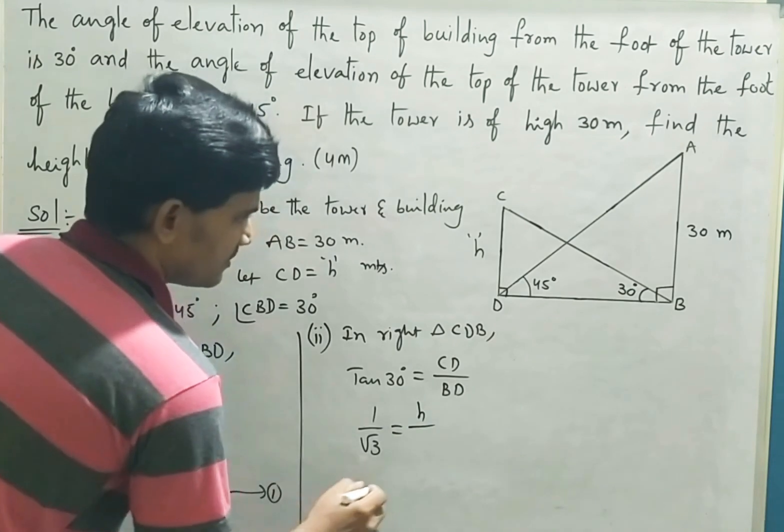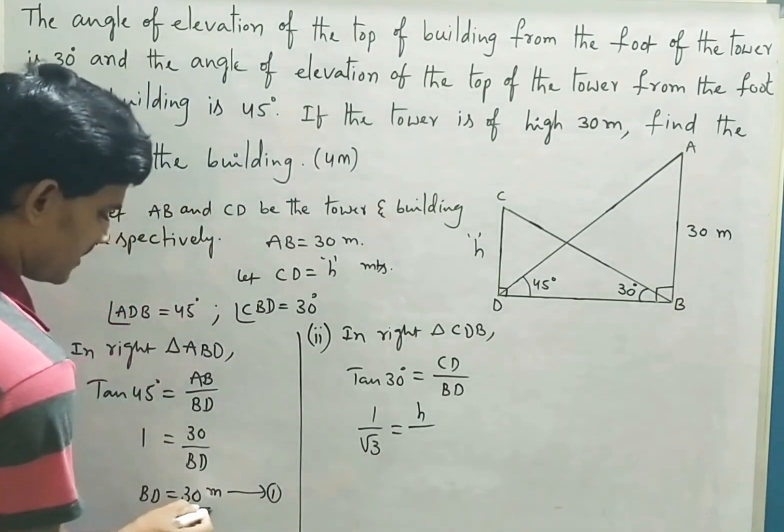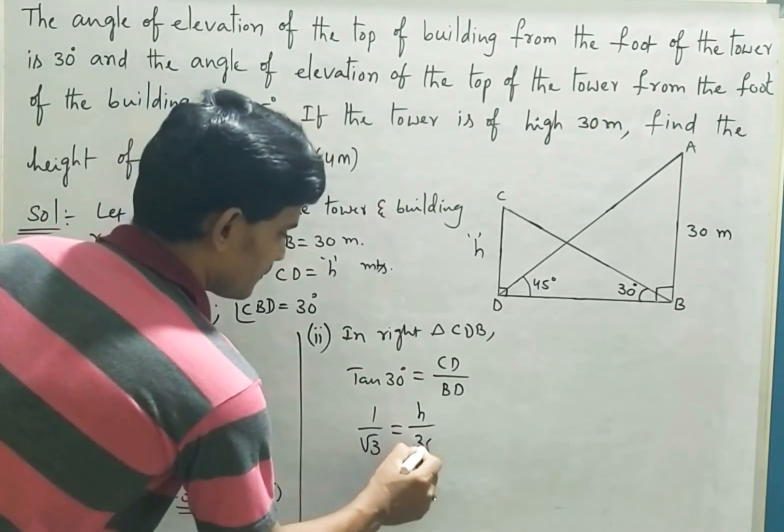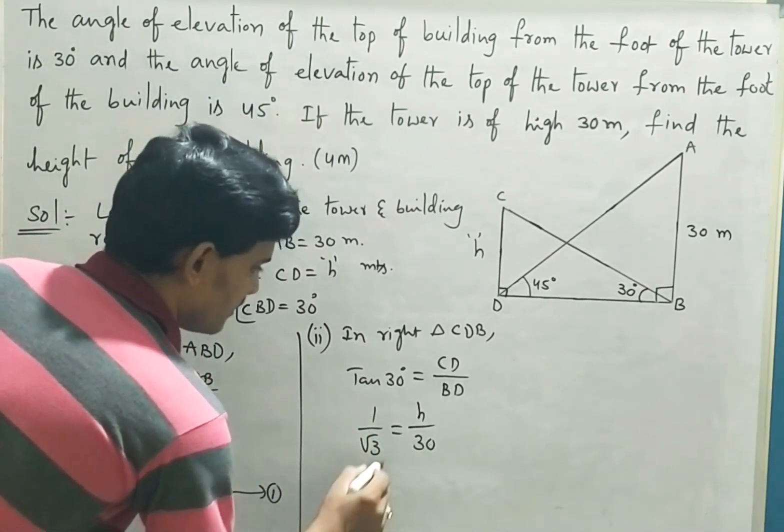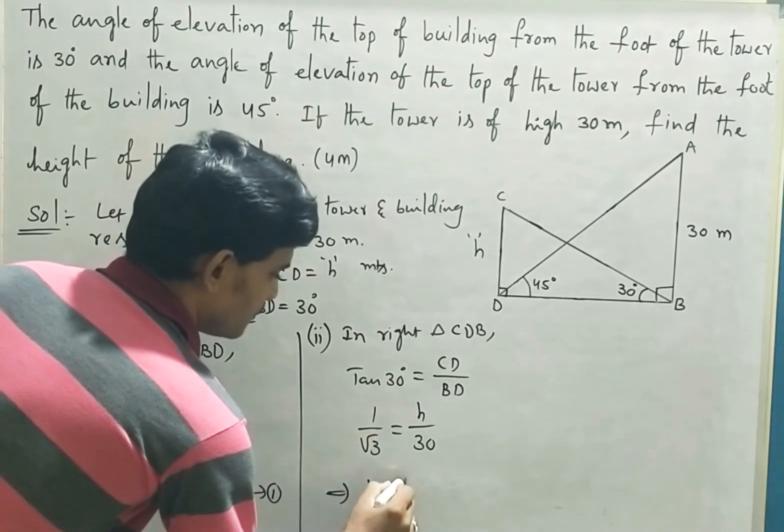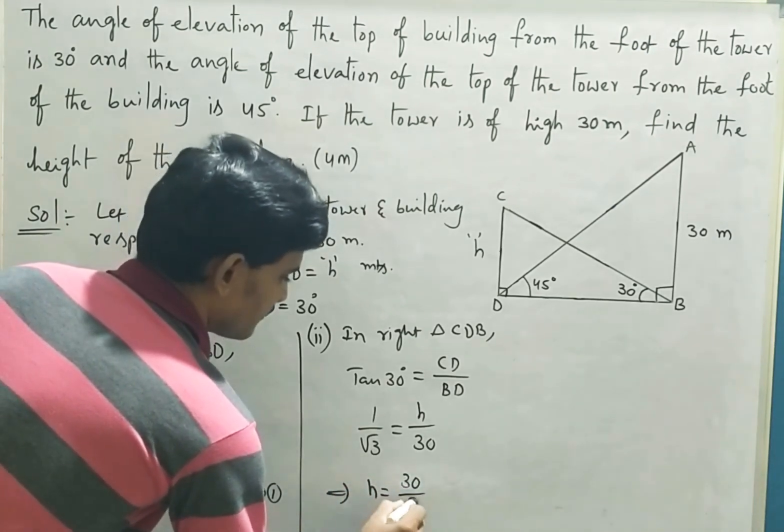We have taken it as h. BD, BD came as 30. Bring this 30 into the other side: h is equal to 30 by root 3.